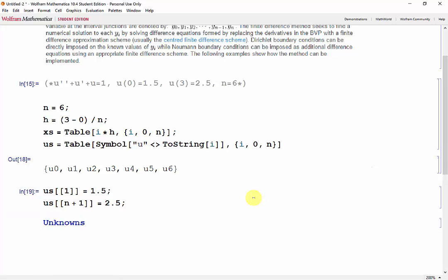So our table of unknowns will be u's going from 2 to n. Next, we need to substitute the derivatives in our differential equation with the respective centered finite difference formulas. And we can use the table function to create a vector containing all of our n minus 1 equations.